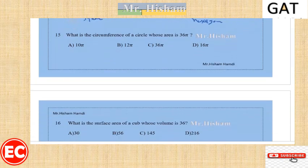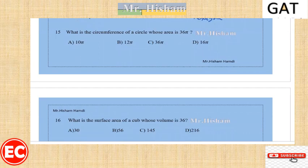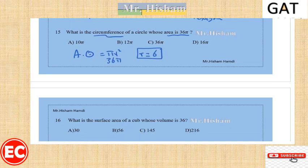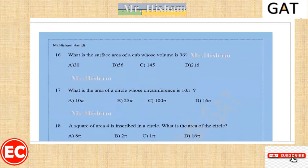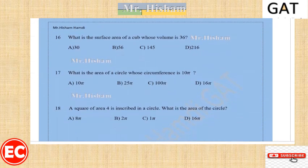Question fifteen: what is the circumference of a circle whose area is 36π? The area of a circle is πr², so πr² = 36π, meaning r = 6. The circumference equals 2πr, so it is 2π times 6, which equals 12π.